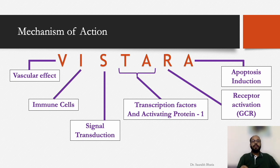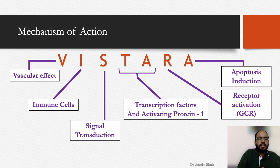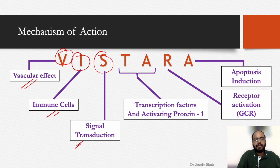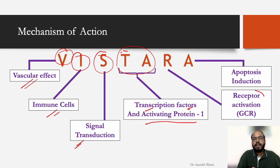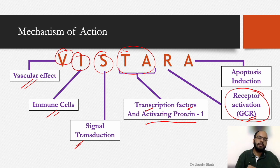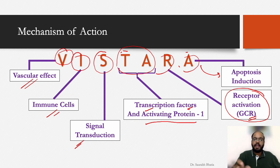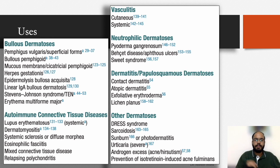A mnemonic to remember the mechanisms of steroid action: VISTARA (like the Tata Airlines). V — vascular effects; I — immune cells and their effects; S — signal transduction; TA — transcription factors (NF-κB, AP-1); R — receptor activation (glucocorticoid receptor, the most important mechanism); A — apoptosis induction. Using this mnemonic, you can easily write at length about the mechanisms of action of steroids.